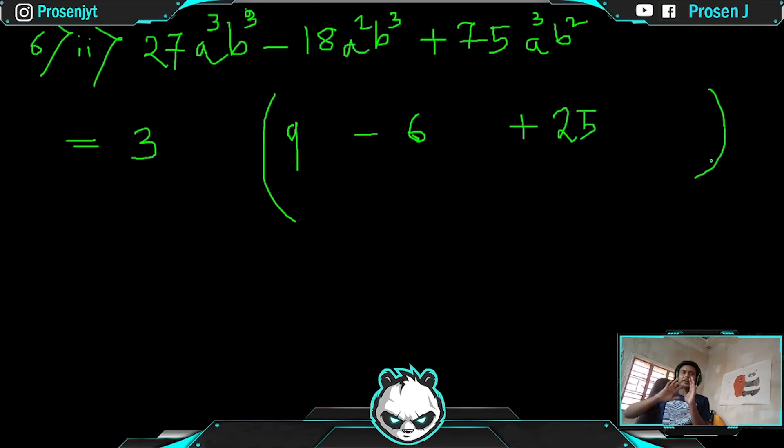Now time for a. First has a³, second has a², third has a³. The minimum possibility is a², which is in the middle term. If we take out a², first one had a³, taking two a's out leaves one a. Second had a² so nothing remains. Third had a³, taking a² out leaves one a.